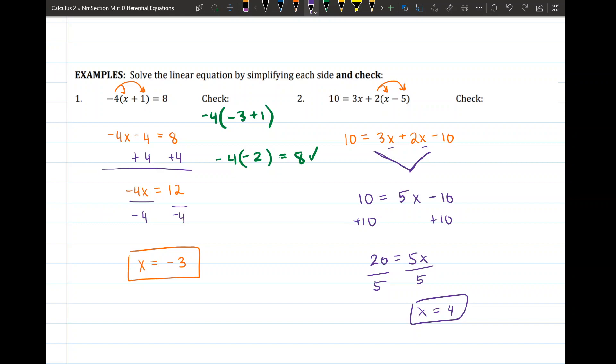And again we can check the same way. So I'm going to do 3 times 4 plus 2 times 4 minus 5. 3 times 4 is 12 plus 2, 4 minus 5 that should be negative 1 and 2 times negative 1 is negative 2 and 12 plus negative 2 is 10, which is exactly what I wanted it to be.